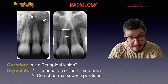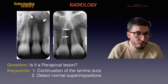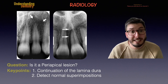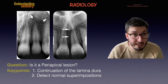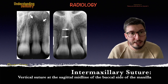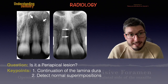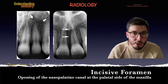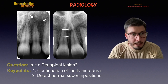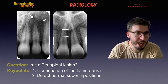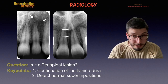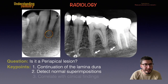In the radiograph on the right side, we have two radiolucent images superimposed on each other. The line marked by the white arrows is the intermaxillary suture, whereas the shadow behind it is the incisive foramen. One structure is on the buccal side, the other — the foramen — is on the palatal side. But we can still follow the shapes of the lamina dura and confirm this is normal anatomy, not a lesion.